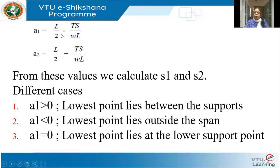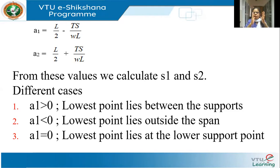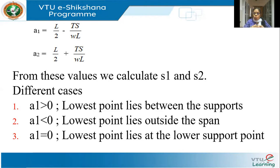Solving gives A1 = L/2 − TS/WL and A2 = L/2 + TS/WL. In the previous lecture, when supports are at the same level, SAG occurs exactly at the midpoint L/2. But here with supports at different levels, the minimum point can occur anywhere depending on the span length L, tension T, SAG S, and weight W. Using A1 and A2, I can find S1 and S2 and then the total SAG.